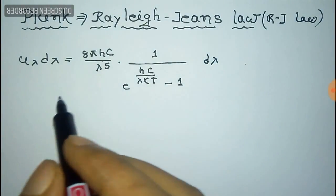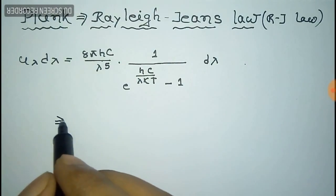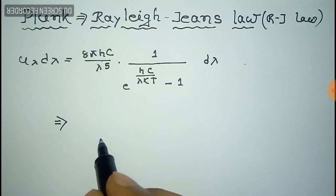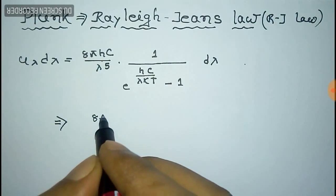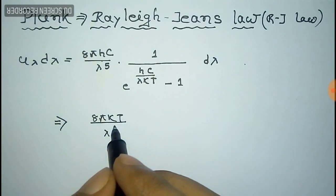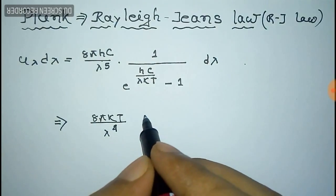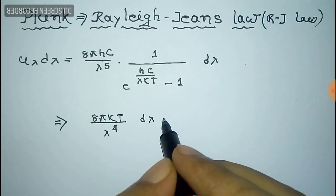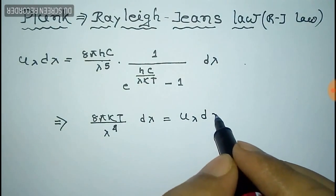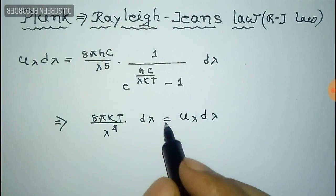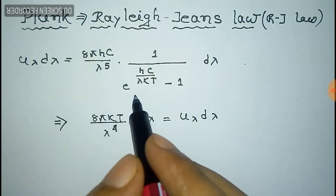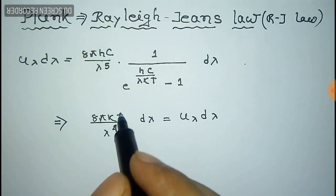From this we have to prove the Rayleigh-Jeans law, which is (8πkT / λ^4) dλ, equal to u(λ)dλ. This is the Rayleigh-Jeans law, and we have to prove it from Planck's law. For this we have to first expand the exponential part of Planck's law.